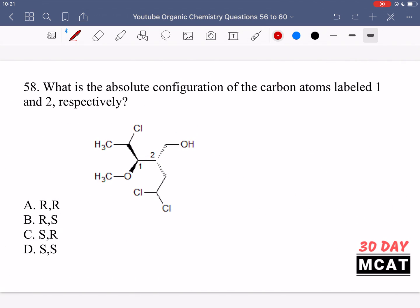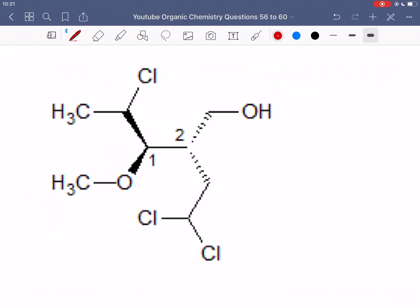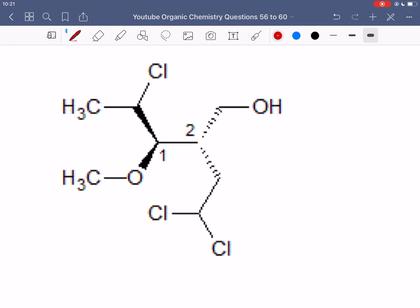In question 58, we're asked, what is the absolute configuration of the carbon atoms labeled 1 and 2 respectively? So we want to know their absolute configuration. So in carbon 1, this is just doing the stereochemistry rules. So carbon 1, we have three bonds, right? So the fourth bond must be to a hydrogen, and then if we see that these two groups are coming out towards us, then the hydrogen, which is the lowest priority group, is in the back.